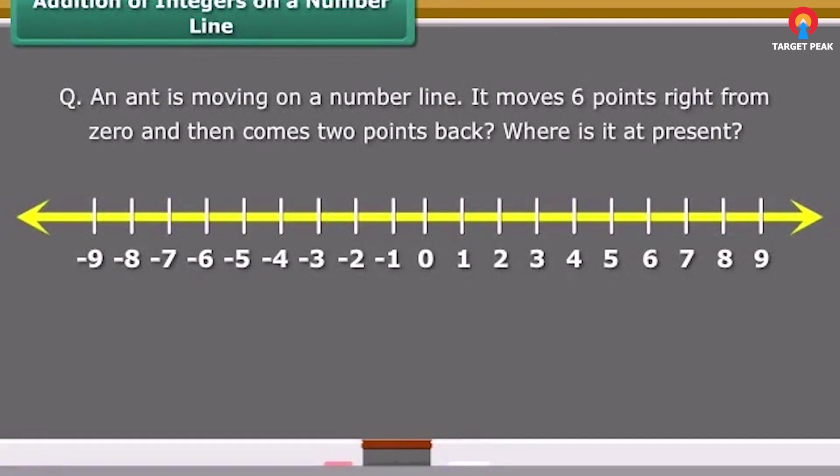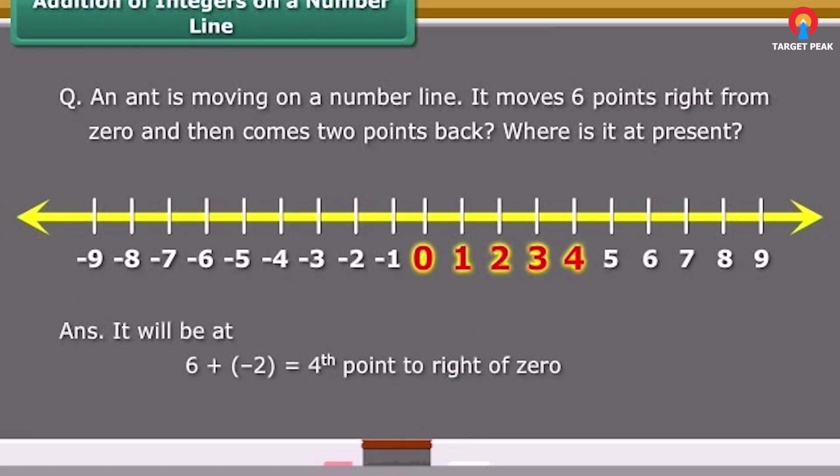An ant is moving on a number line. It moves six points right from zero and then comes two points back. Where is it at present? It will be at six plus minus two equals fourth point to the right of zero.